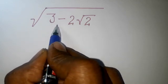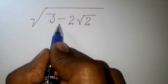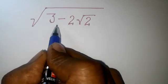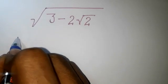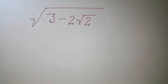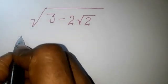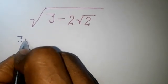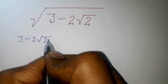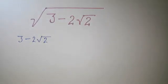What is this value? We will find it. So here, 3 minus 2 root 2 can be written in this way. Here we can see that 2 is the multiple of 2 into 1, and the addition of 2 and 1 is 3. So we can write this in this way.